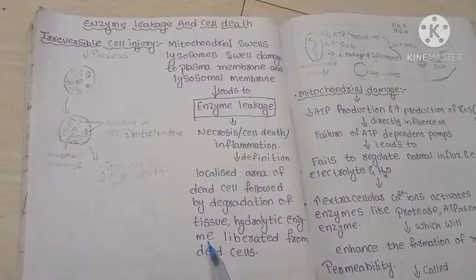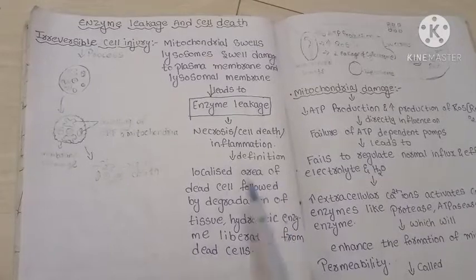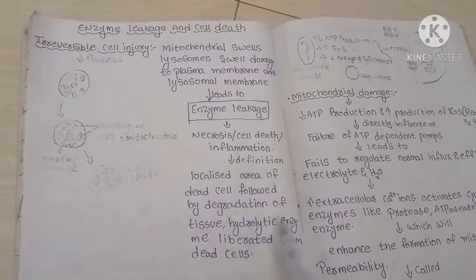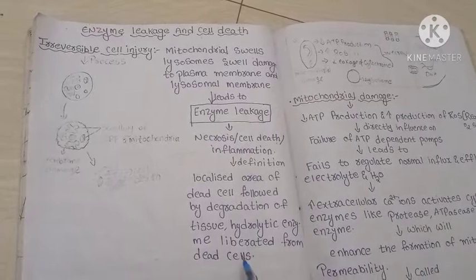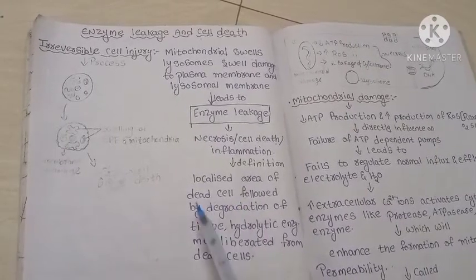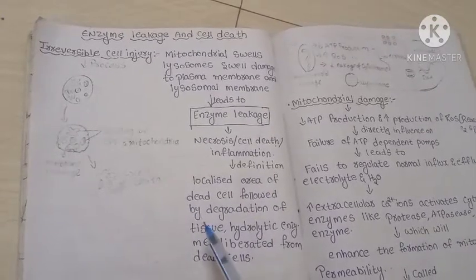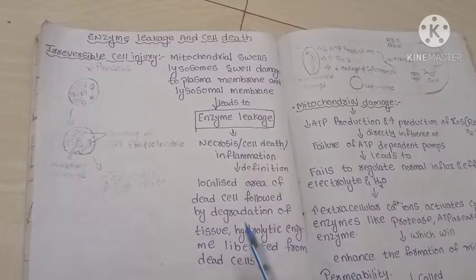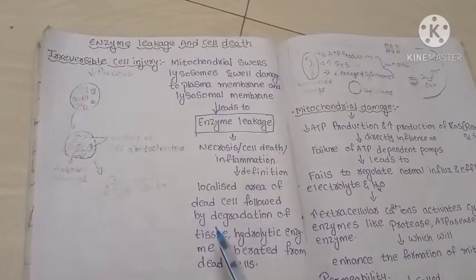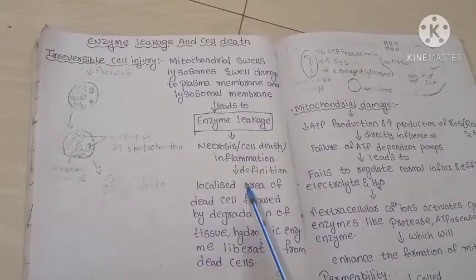The definition of necrosis is: a localized area of dead cells followed by degradation of tissues by hydrolytic enzymes liberated from the dead cells. That means the dead cells contain some hydrolytic enzymes that damage the healthy cells surrounded by the dead cells.